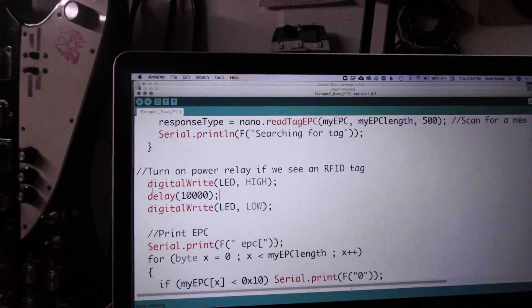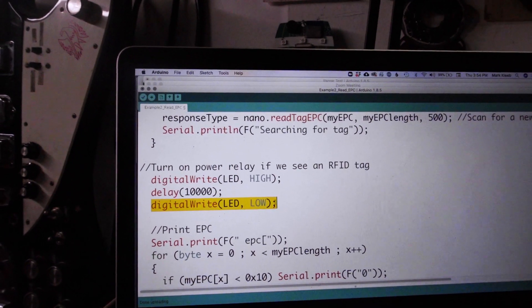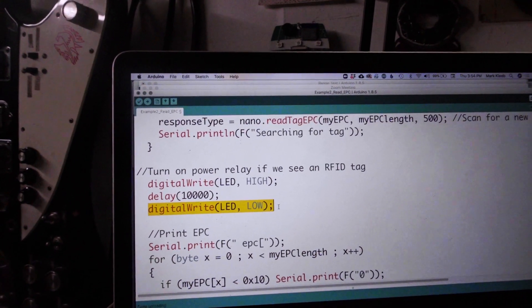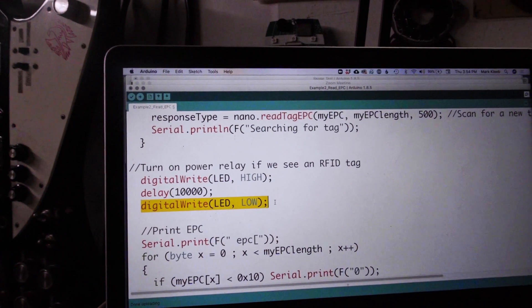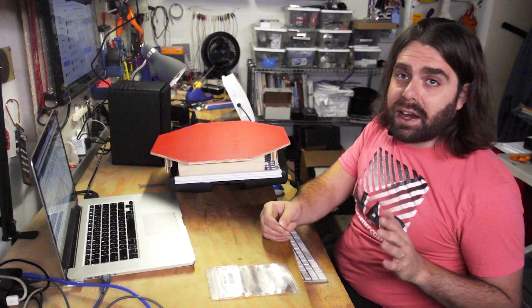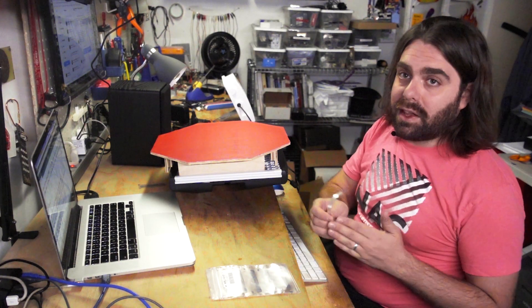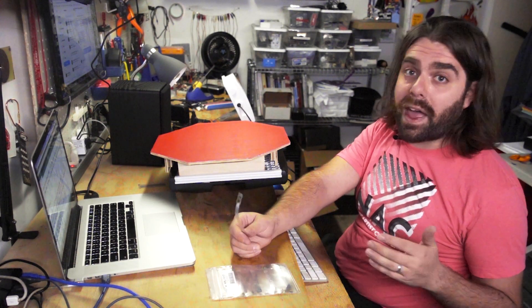So I've programmed everything to turn off after 10 seconds so we don't have a constant siren going off. This also will reset the code back to its original state so we can keep scanning for more tags. Next, I need to work on how I'm going to actually hand the RFID tag to a customer when they open a tab.